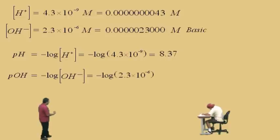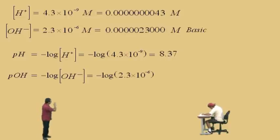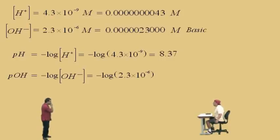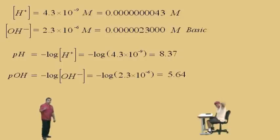Dr. Professor Perez: Hydrogen hydroxide ion concentration — what do you get? 2.3 times 10 to the negative 6. Remember, we're taking the log of two significant figures, which means we should have two decimal places. And what do you get, Charlie? 5.64. Dr. Professor Perez: 5.64, that's right.